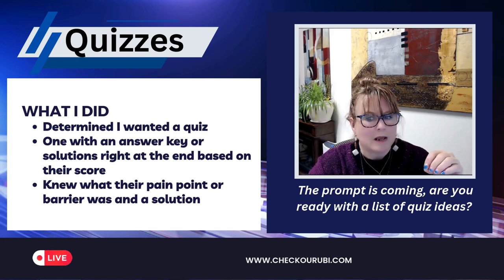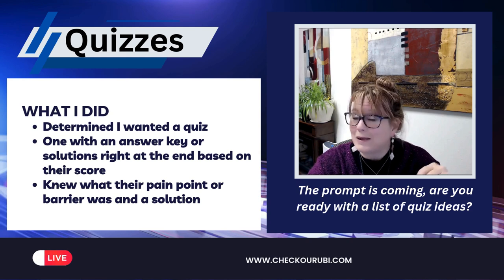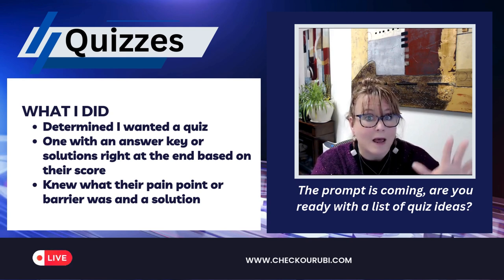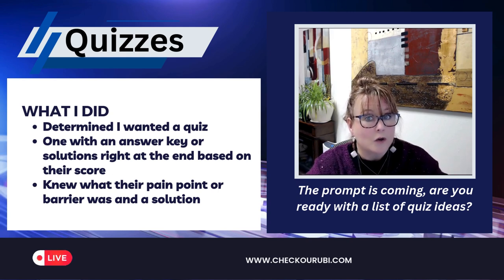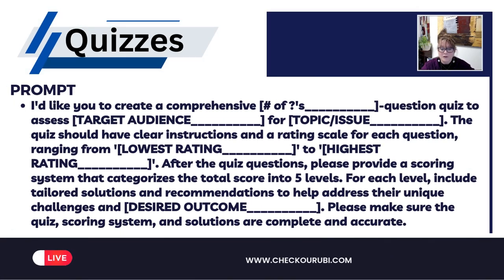She easily gave me the questions, but then I wanted a rating system and an answer key so I could send the whole quiz to my audience. They would take the quiz, assign a number value, total the number value, and at the bottom would be the answer key. Here is the prompt: 'Ruby, I'd like you to create a comprehensive 25-question quiz to assess my small business owners for which business growth strategy suits you best. The quiz should have clear instructions and a rating scale for each question ranging from one to five. After the quiz questions, please provide a scoring system that categorizes the total score into five levels. For each level, include tailored solutions and recommendations to help address their unique challenges and direct them to the best solutions. Please make sure the quiz, scoring system, and solutions are complete and accurate.'